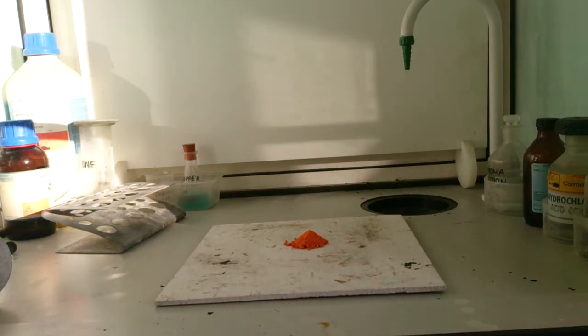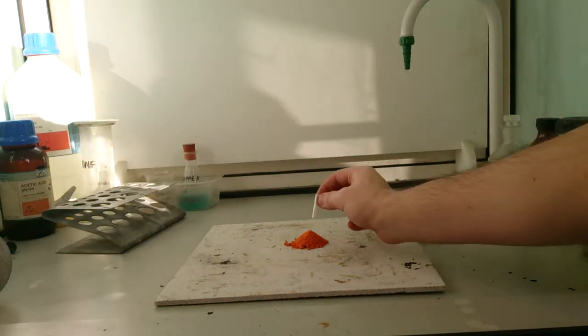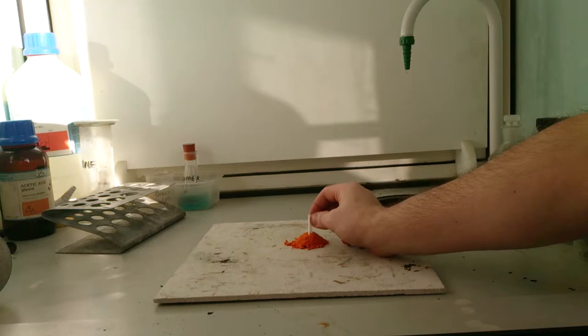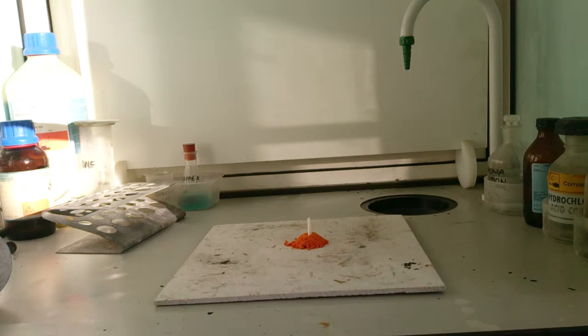Of course, as usual, don't try this at home, even if you could get hold of ammonium dichromate. Now, what I'm putting in there is a small piece of filter paper that's been soaked in ethanol. And that is going to basically act as my fuse.